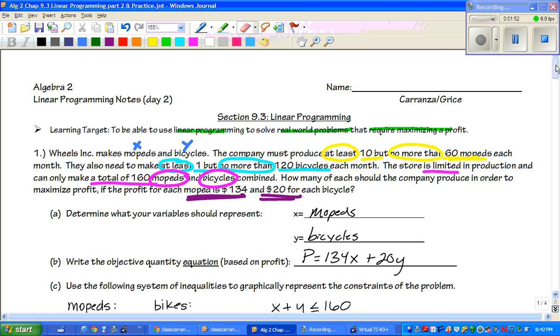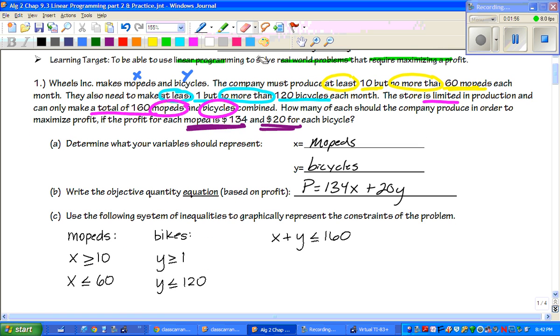The next thing we want to know is we have to write the objective quantity equation, and that's based on the profit. Right here it tells us the profit, so the profit is 134 for each moped, which is X, plus 20 for Y. Now we have to write down our limits. The mopeds, it says, must be greater than 10 and less than or equal to 60. And that's where this sentence right here comes into play. It said must produce at least 10, but no more than 60. So that's where those two inequalities come from.